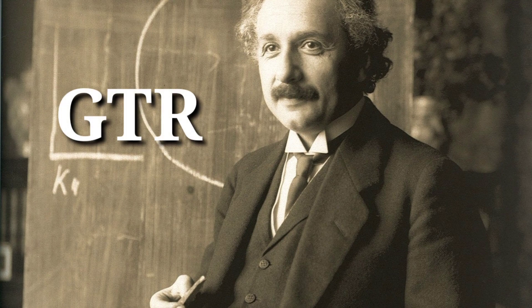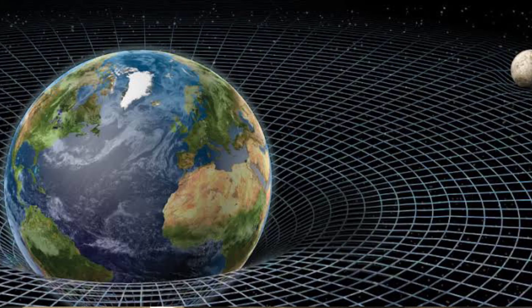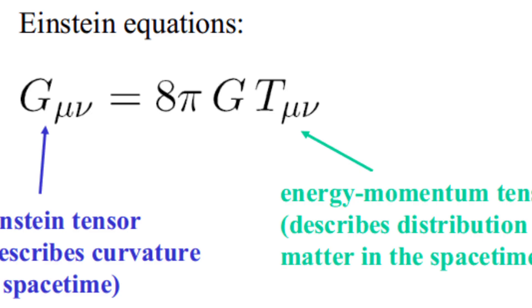Einstein's general theory of relativity explains gravity as a distortion of space-time caused by the presence of matter or energy. A massive object such as the Sun generates a gravitational field by warping the geometry of surrounding space-time.